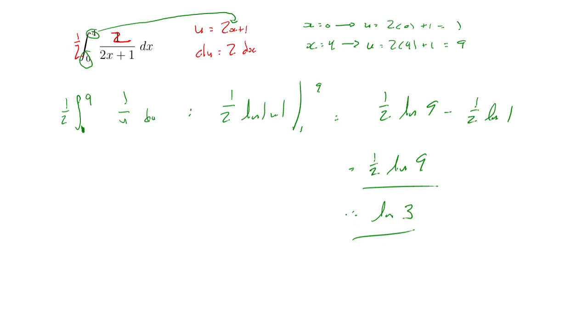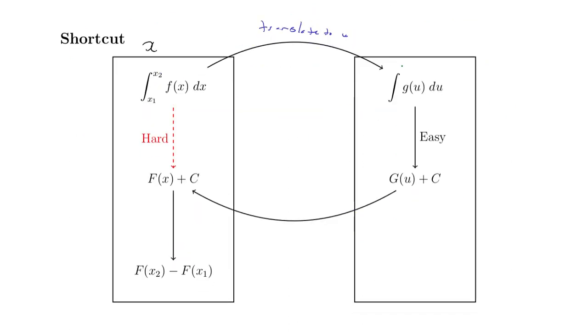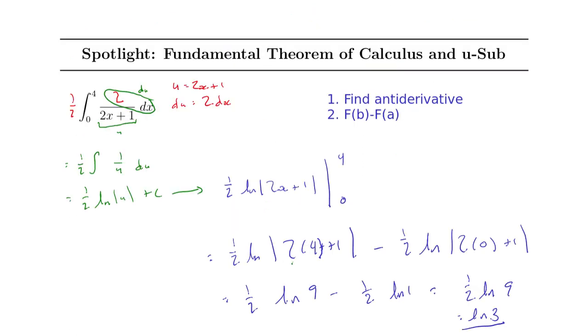But you'll notice it's got fewer steps. The reason it has fewer steps is because we do this translation early. So instead of having to take this and switch it back over to x's and then do this same 2 times 0 plus 1 and 2 times 4 plus 1, because you'll notice we did that. There's our 2 times 4 plus 1. There's our 2 times 0 plus 1. We're just doing those earlier so we don't have to do this step here.